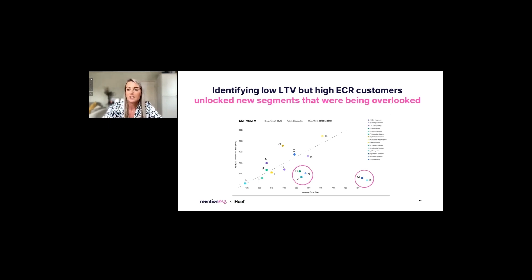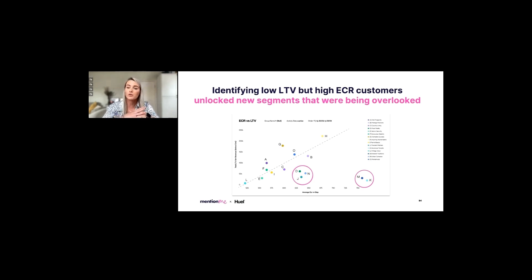However, because we've now layered on advocacy data, we've unlocked five key segments that Huel were previously overlooking — all the ones circled in pink on screen. The really key thing to note is that all of these customer segments are quite low on the LTV axis, so they're not spending a huge amount themselves, and many of them would have potentially been considered inactive or defecting. However, on the X-axis, they are driving a huge amount of revenue indirectly through referral.